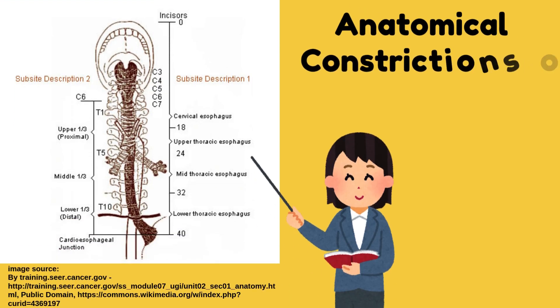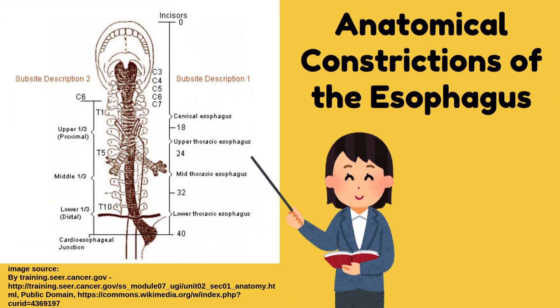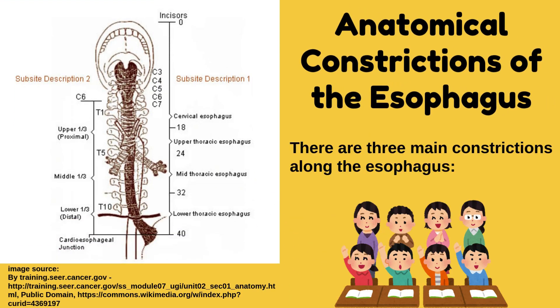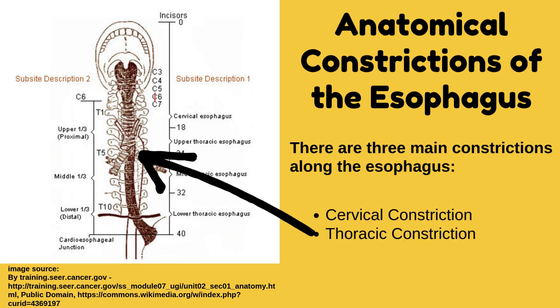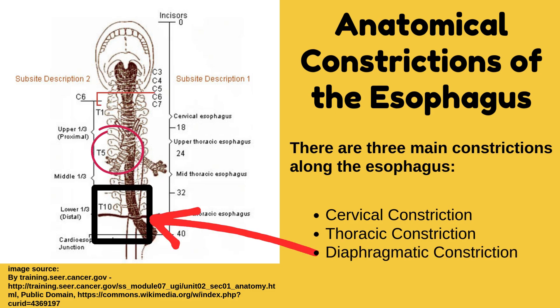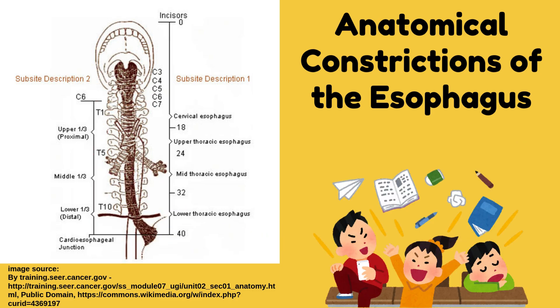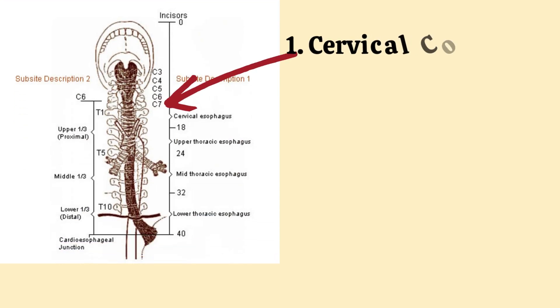Now, let's learn about the anatomical constrictions of the esophagus. There are three main constrictions along the esophagus: cervical constriction, thoracic constriction, and diaphragmatic constriction. We will discuss them one by one.